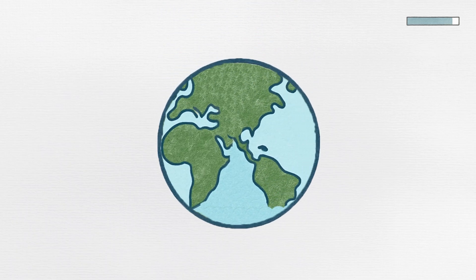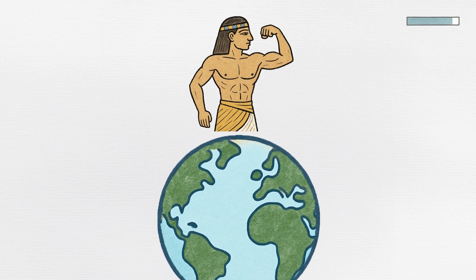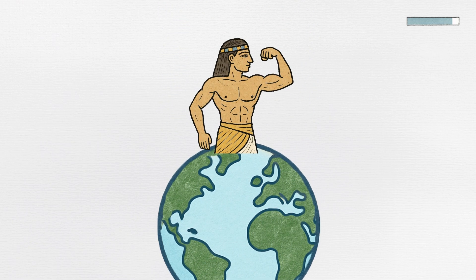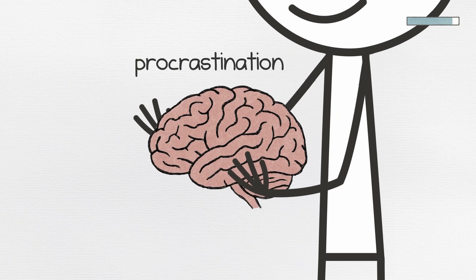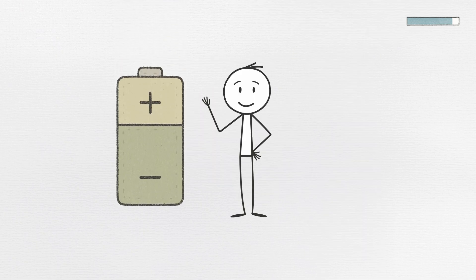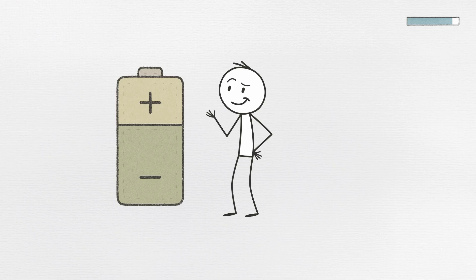This conservation instinct made perfect sense when mental energy was scarce and physical survival was the priority. But in today's world, where thinking is survival, this ancient wisdom becomes a modern problem. Your brain loves procrastination because it feels like smart resource management, even when the resources it's trying to save are exactly what you need to use.